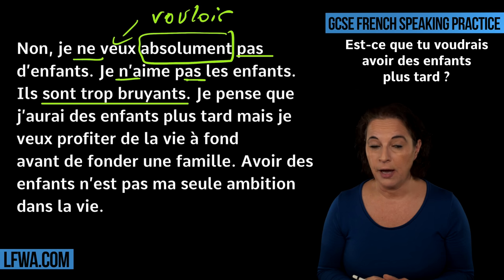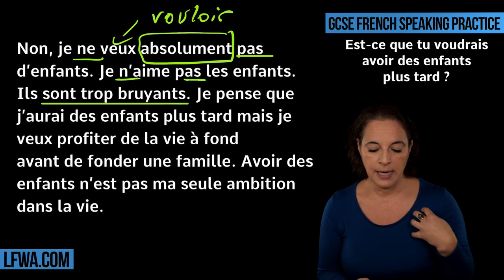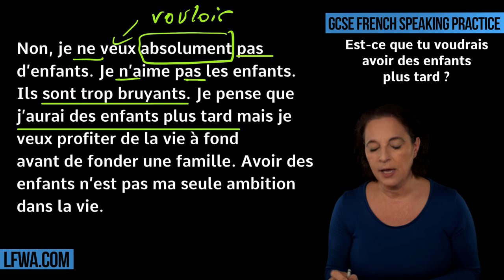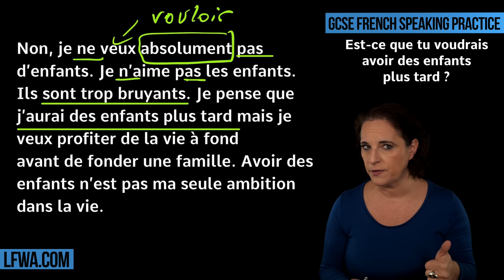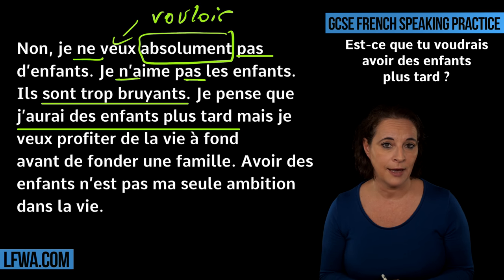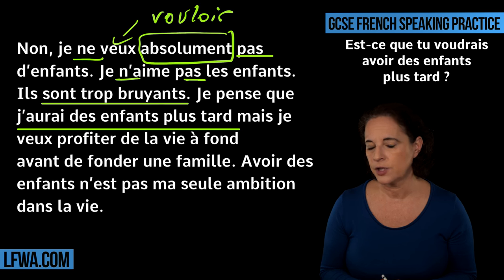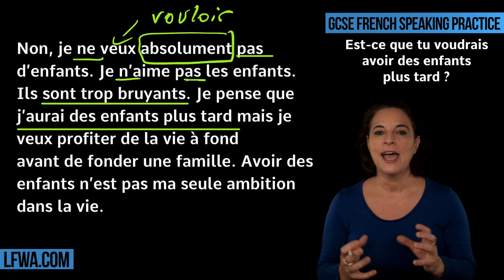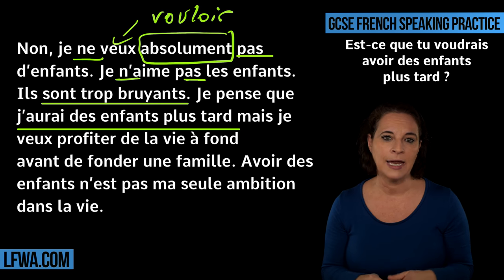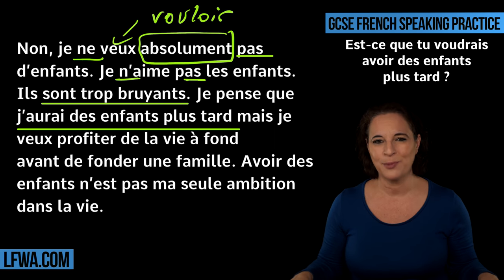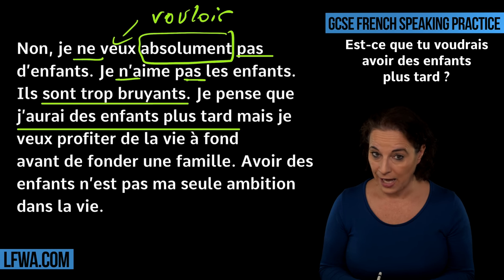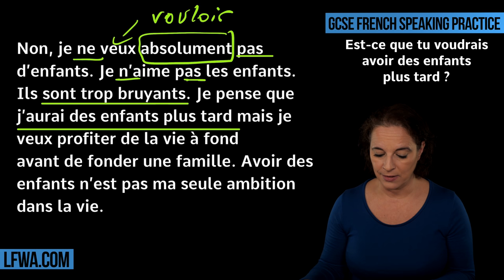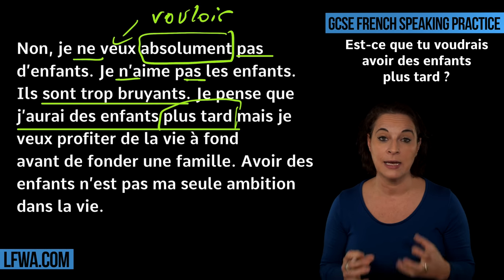Je pense que j'aurai des enfants plus tard — and this is where the difficulty is. You can also say à mon avis, in my opinion. Why is this complex and why will the examiner mark you up? Because you are using the future tense of avoir. J'aurai means I will have. Please learn: j'ai — I have; j'aurai — I will have; j'avais — I had; j'aurais — I would have. Any time you use a complicated tense, it's a bonus point. Plus tard — later — is a comparative we like. We like comparatives in answers.